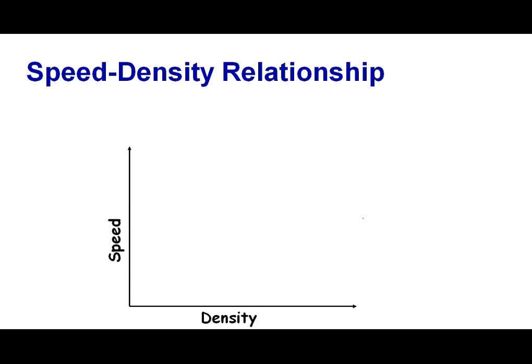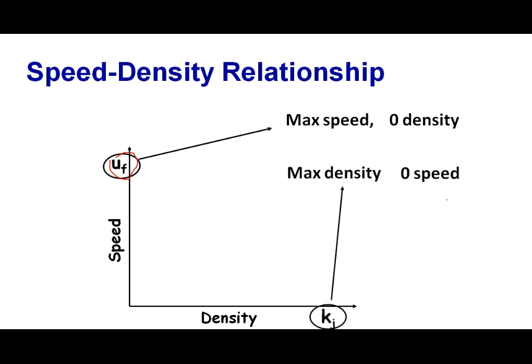This relationship can be understood as follows: if you take density on the X axis and speed on the Y axis, then at zero density — when there is no vehicle on the road — the speed will be the free flow speed. This is the maximum speed a vehicle can attain. Similarly, at maximum density where vehicles are queued bumper to bumper, which we call the jam density K_J, speed will be zero.